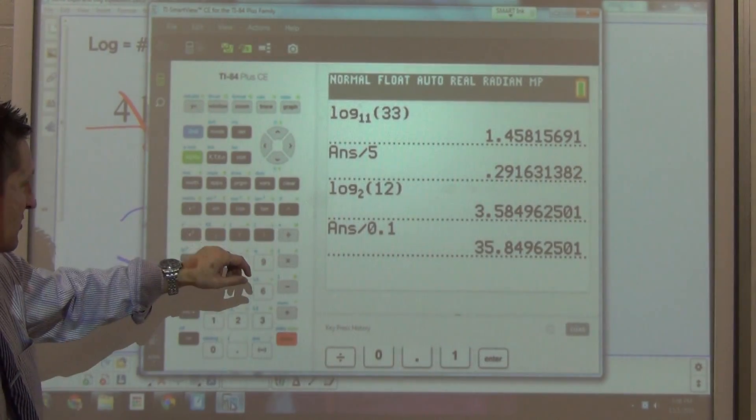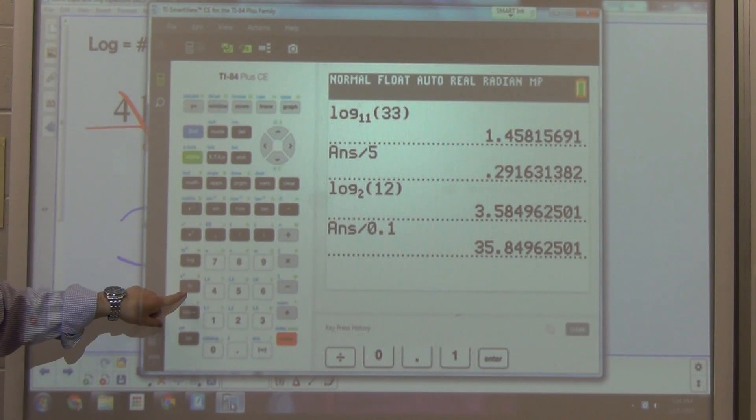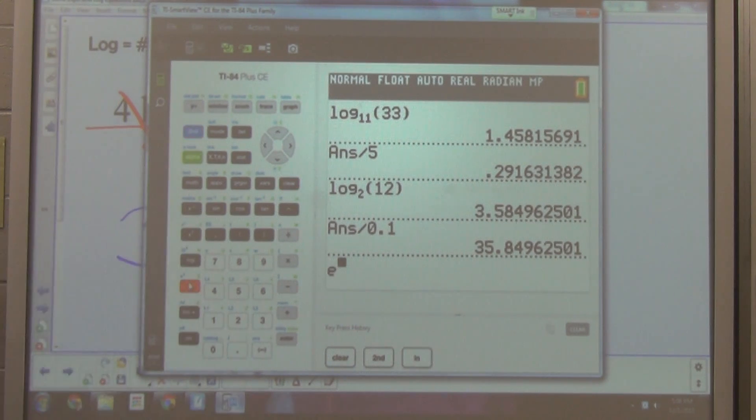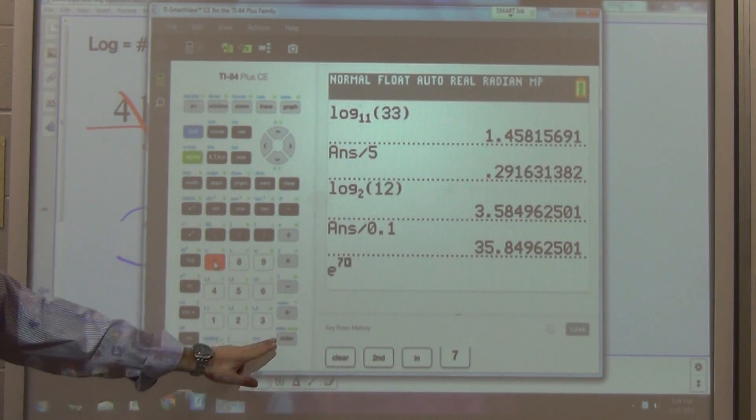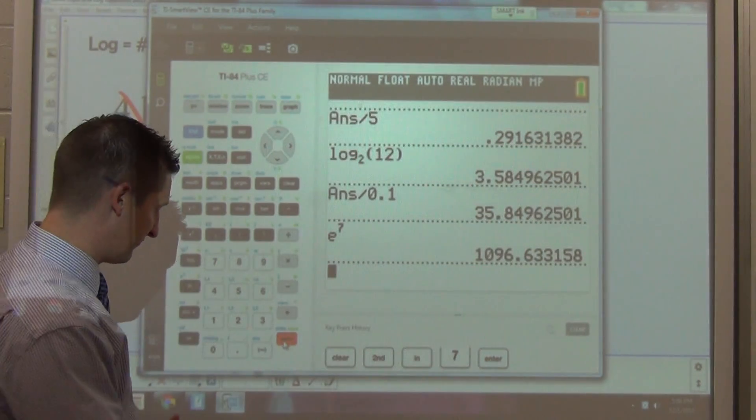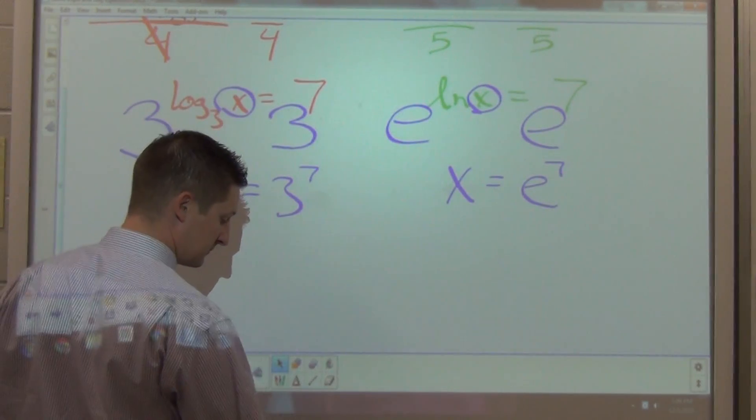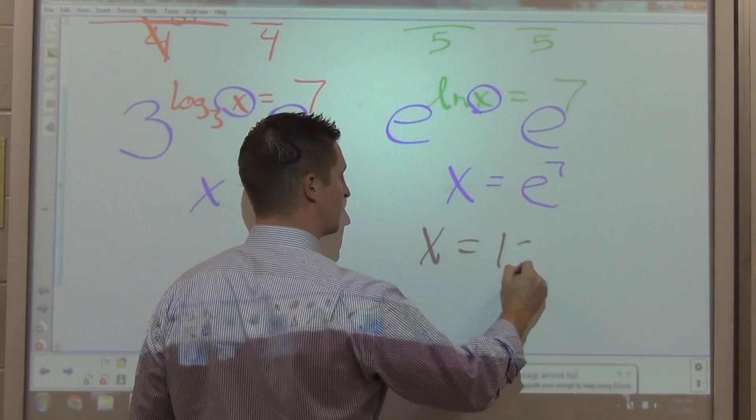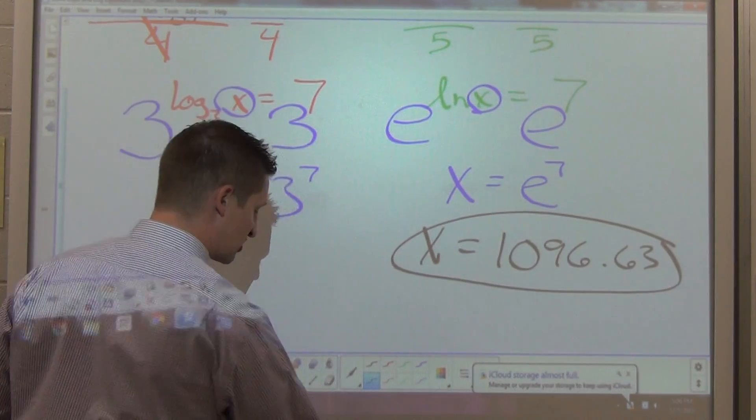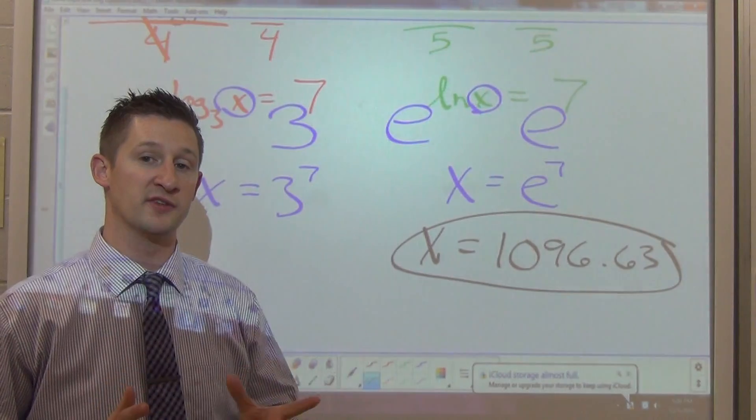To use e, the special number, e is located right above the division symbol, or there's another one that's e to the x right above the ln key. So what I'm going to do, not the ln, I'm going to take e raised to a power. e is going to be raised to the 7th. I hit enter. I get a big number. I write that down. 1,096 points, roughly 6-3. So x is equal to 1,096 point 6. There's my answer. So that's solving some logarithmic equations when there's just a logarithm on one side only. Exponentiate both sides to get rid of the logarithm and then solve everything from there.